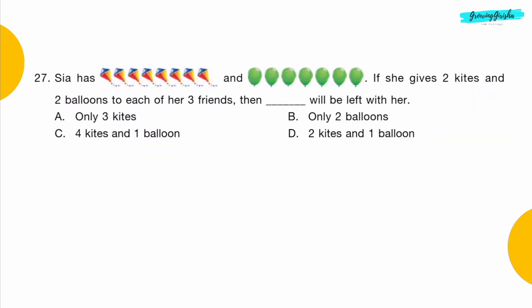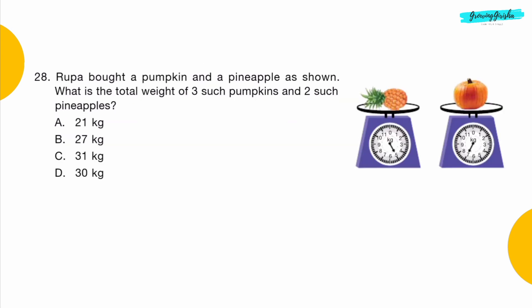Question 27: Sia has 8 kites and 7 balloons. If she gives 2 kites and 2 balloons to each of her 3 friends, then dash will be left with her. Option D: 2 kites and 1 balloon.